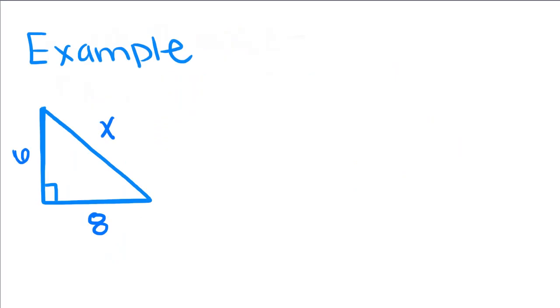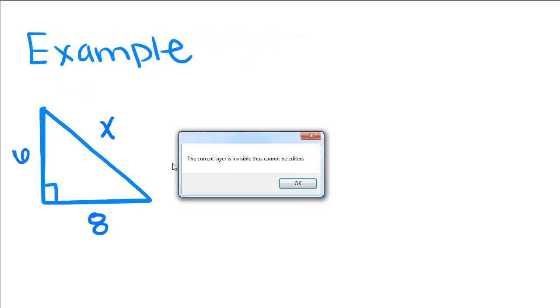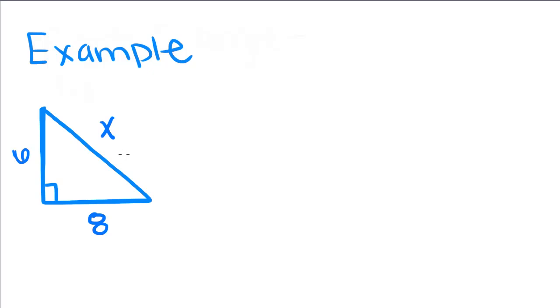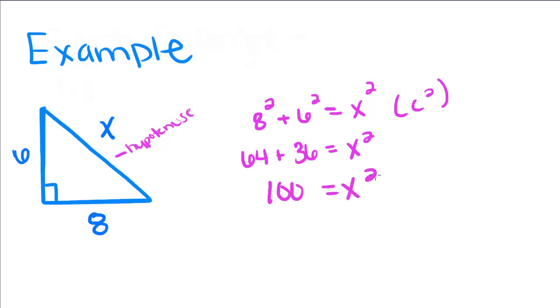So now that we know that, we're going to do an example. So this is the hypotenuse. And this is what we're trying to find out. So a squared, which is 8 squared plus 6 squared, is equal to x squared or c squared. It's the same thing because they're just variables. So 8 squared is 64 plus 6 squared is 36 is equal to x squared. So 100 is equal to x squared, but we want to know what x is equal to. So we're going to take the square root of both sides and we get x is equal to 10.